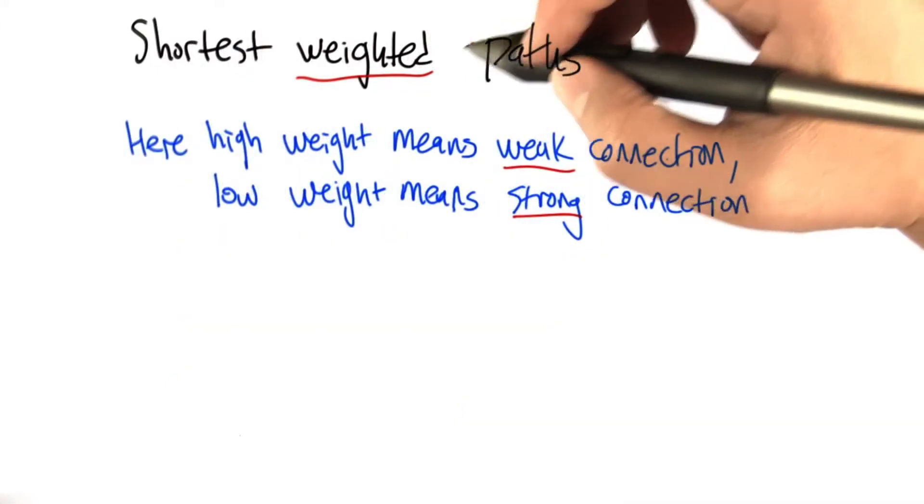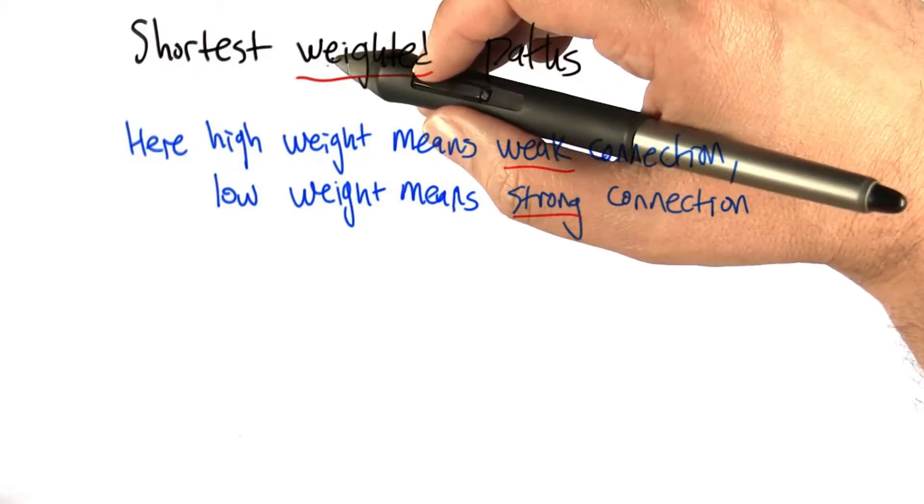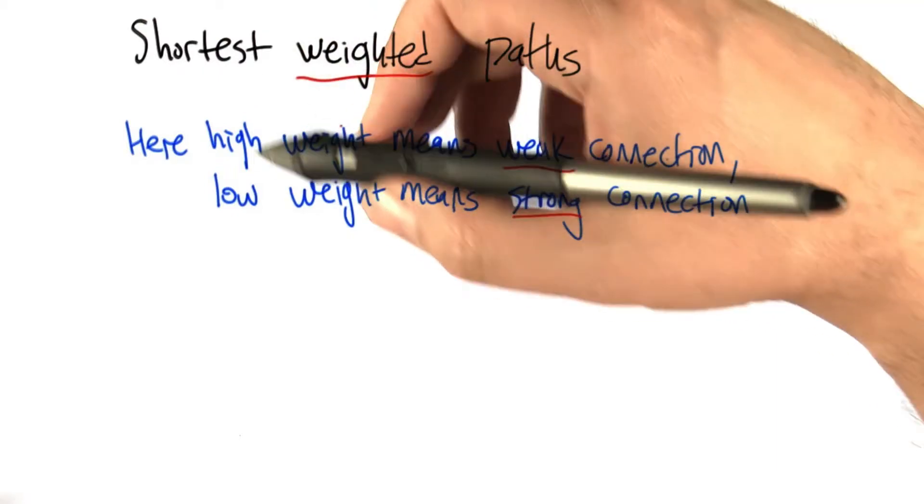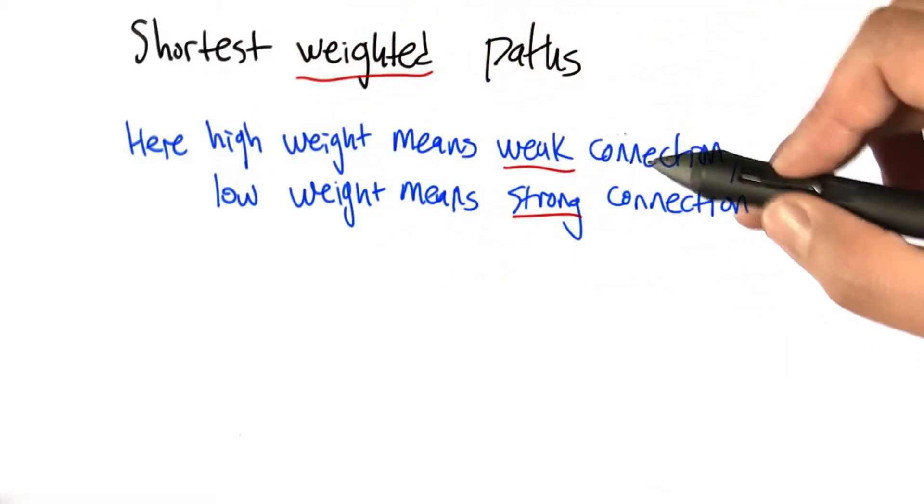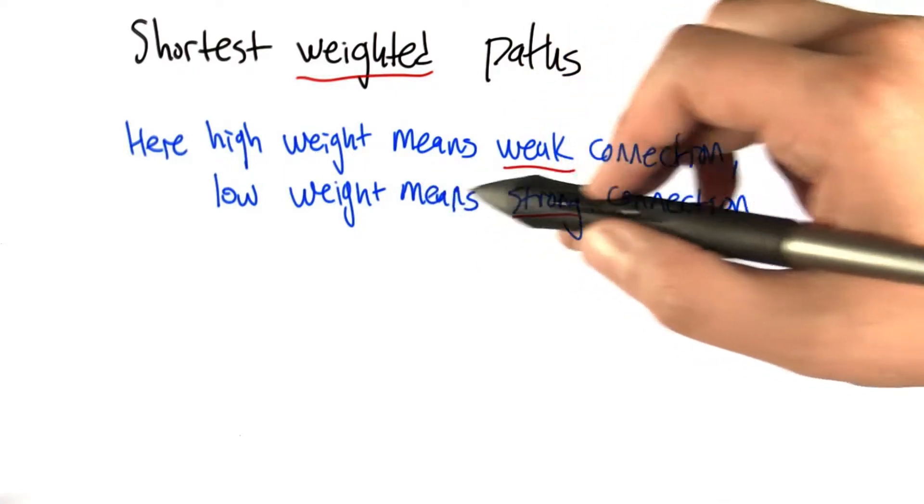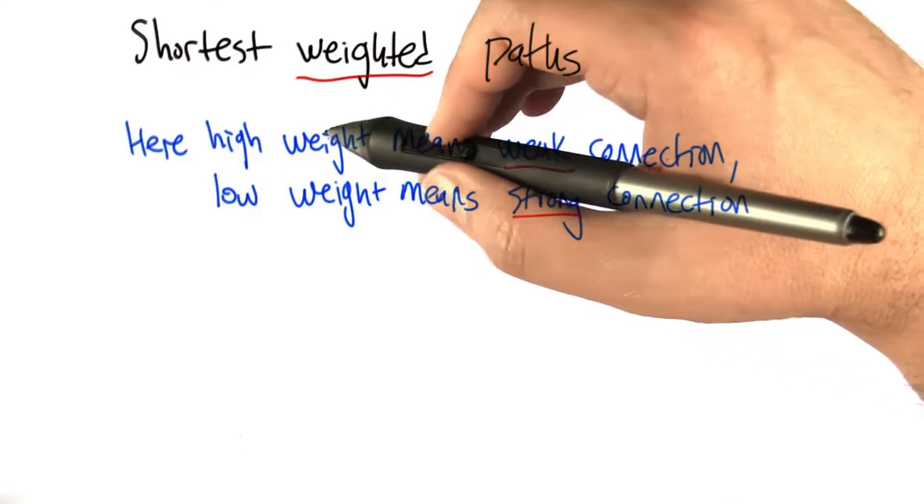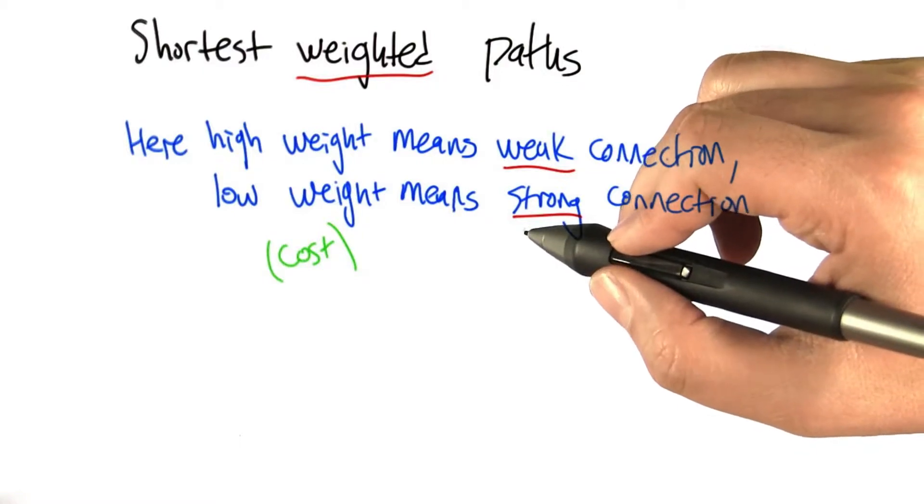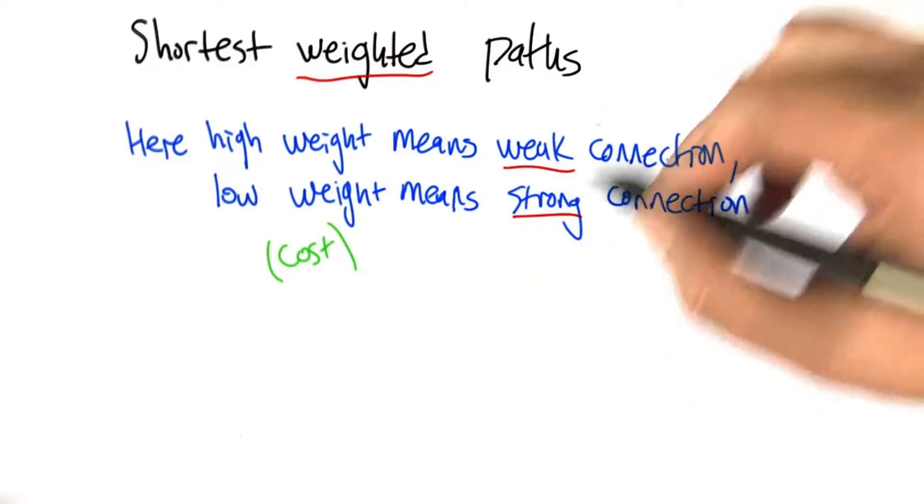We had talked about shortest paths in a graph, but now let's extend this notion to the shortest weighted path in a graph. In this example, we're going to look at a high weight meaning a weak connection, and a low weight meaning a strong connection. You can think of the weights almost as being a kind of cost, and we're looking for basically cheap routes from one person in the network to another.